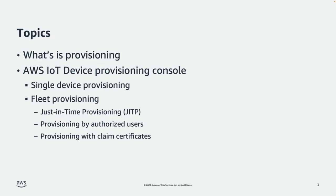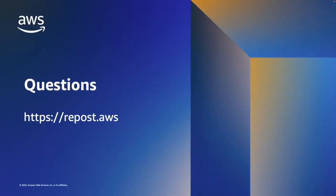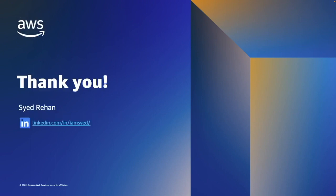So there we have it. In this video, we've walked through creating a single device and how to provision it, and also looked at fleet provisioning using JITP or just-in-time provisioning, as well as authorized user provisioning and claim certificate. If you have any questions, please don't hesitate to reach out to us on repost.aws under the IoT tag. Thank you very much for watching. From myself and the rest of the AWS IoT team, have a great day.